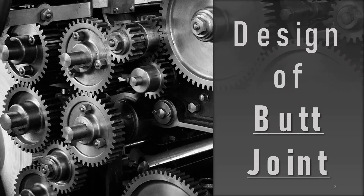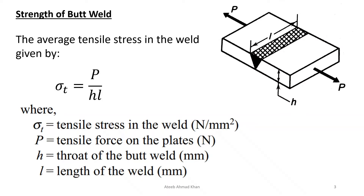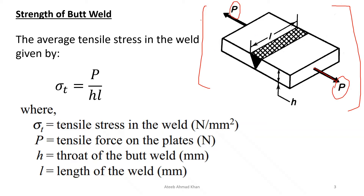In this lecture, I will explain the design of butt joint and then solve some related problems. In this figure, you can see a welded connection — a welded plate subjected to a tensile force of magnitude P on both sides. The two plates are welded together with a V butt joint, where the edges of both plates are beveled to form a V shape.